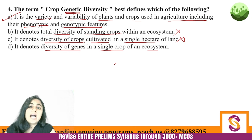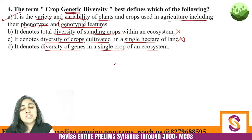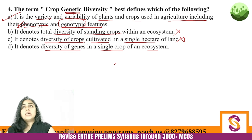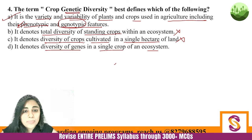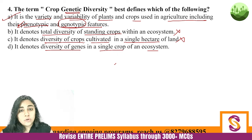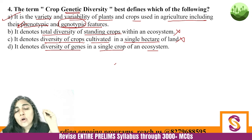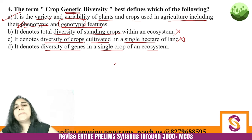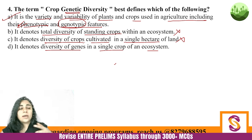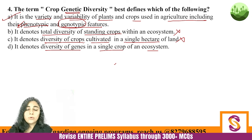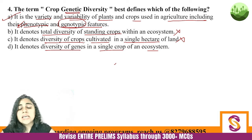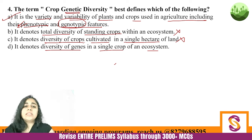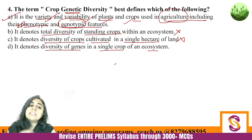Crop genetic diversity means how genetic diversity is different, and how that genetic diversity is manifesting itself physically. The phenotype is the physical manifestation of genetic diversity. For example, take twins: there are identical twins and non-identical twins. In non-identical twins, there is genetic similarity but the phenotypic similarity is not there — that's why faces of twins born seconds apart can look different. Some twins look exactly the same because they share the same phenotypic features. Similarly, crop genetic diversity studies the variety and variability of plants and crops in agriculture, including phenotypic and genotypic features.